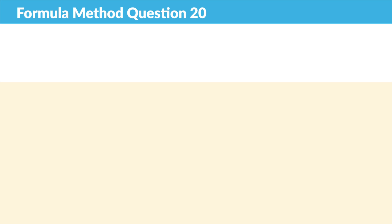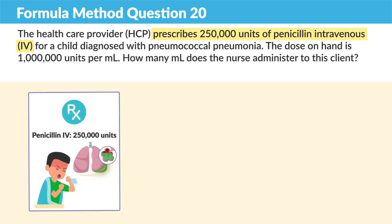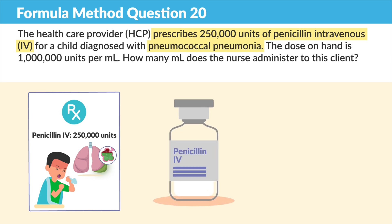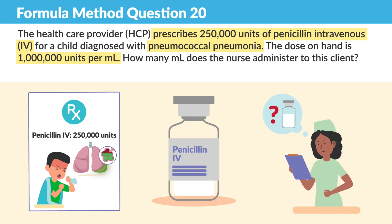Now for question 20. The healthcare provider prescribes 250,000 units of penicillin IV for a child diagnosed with pneumonia. The dose on hand is 1 million units per ml. How many ml's does the nurse administer to the client?